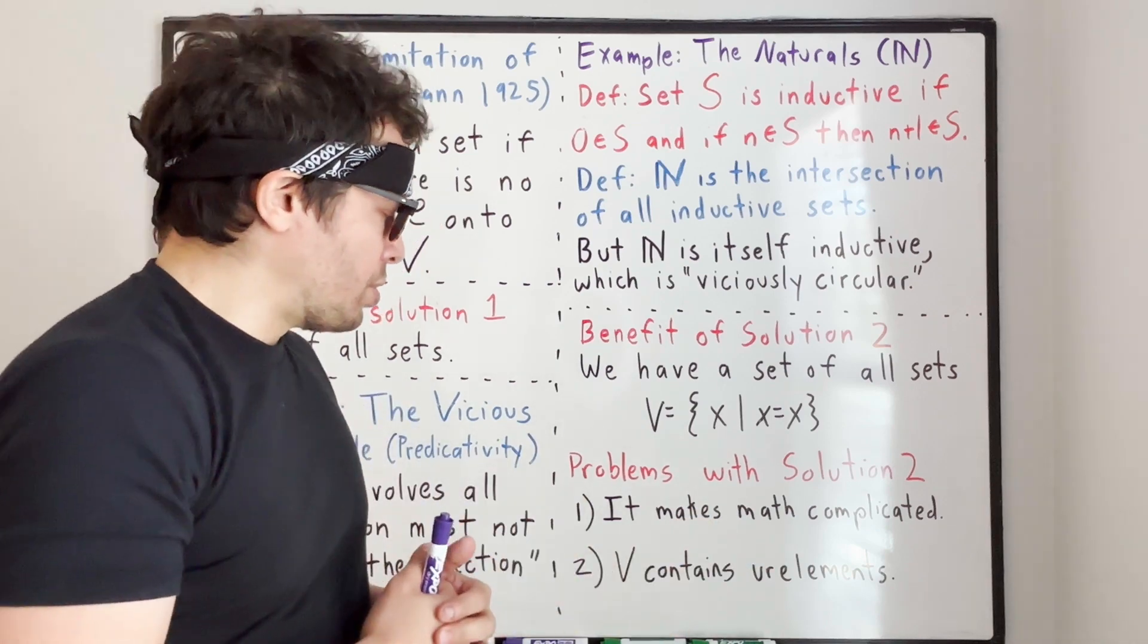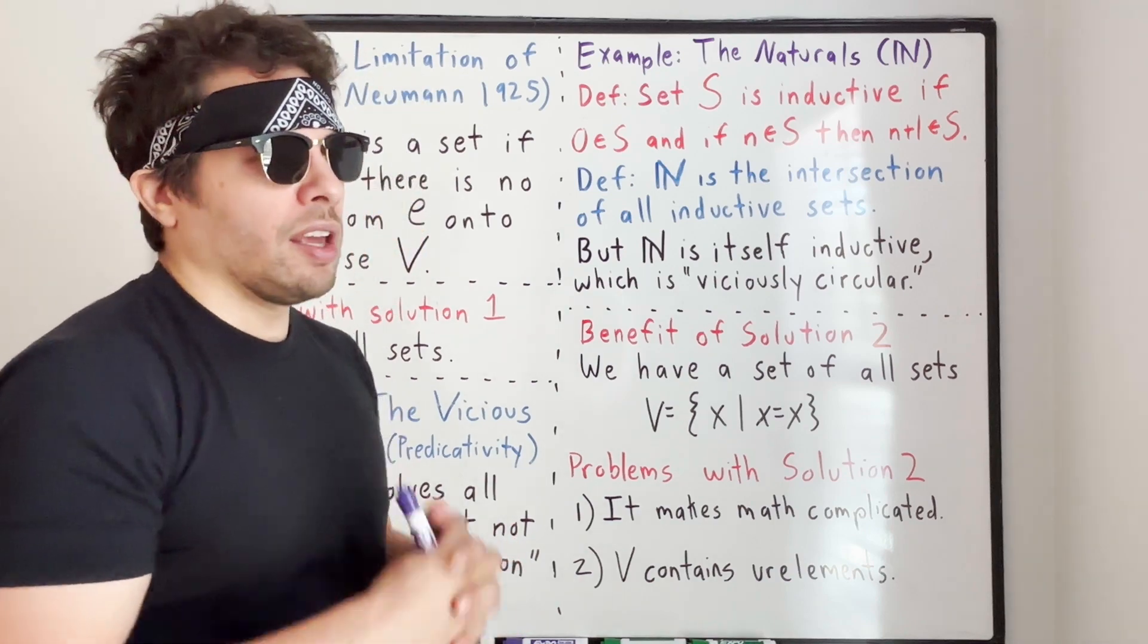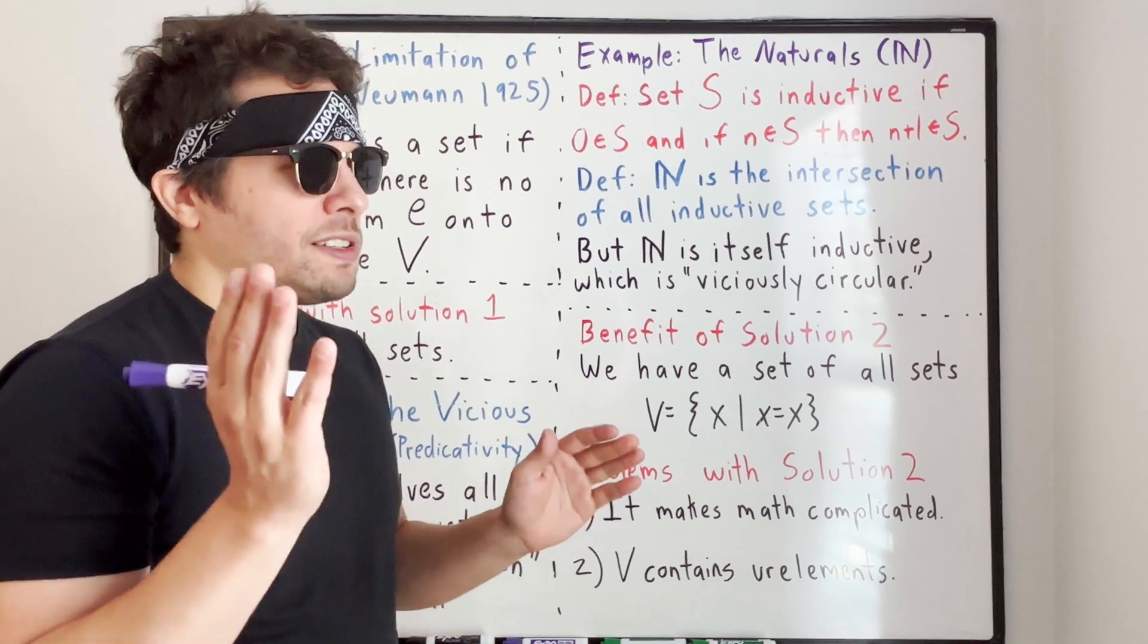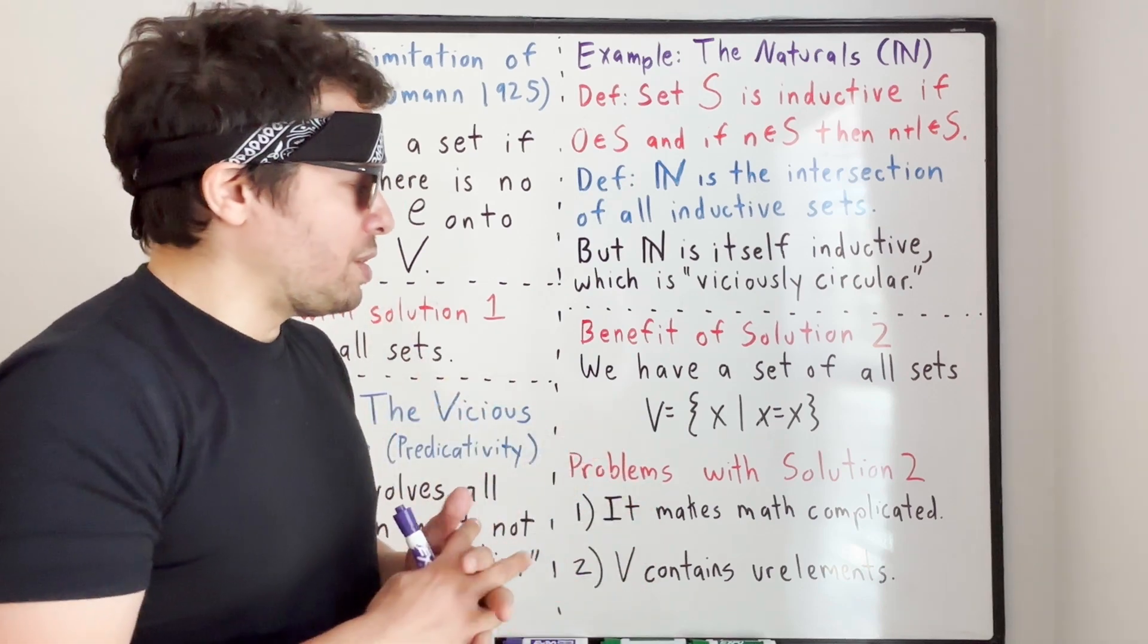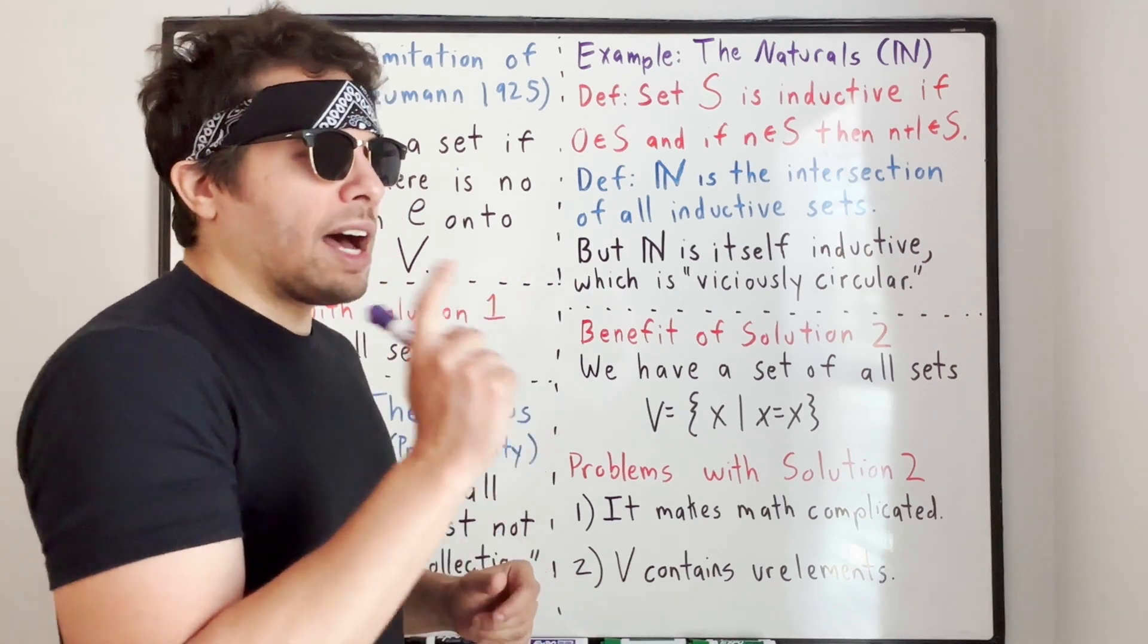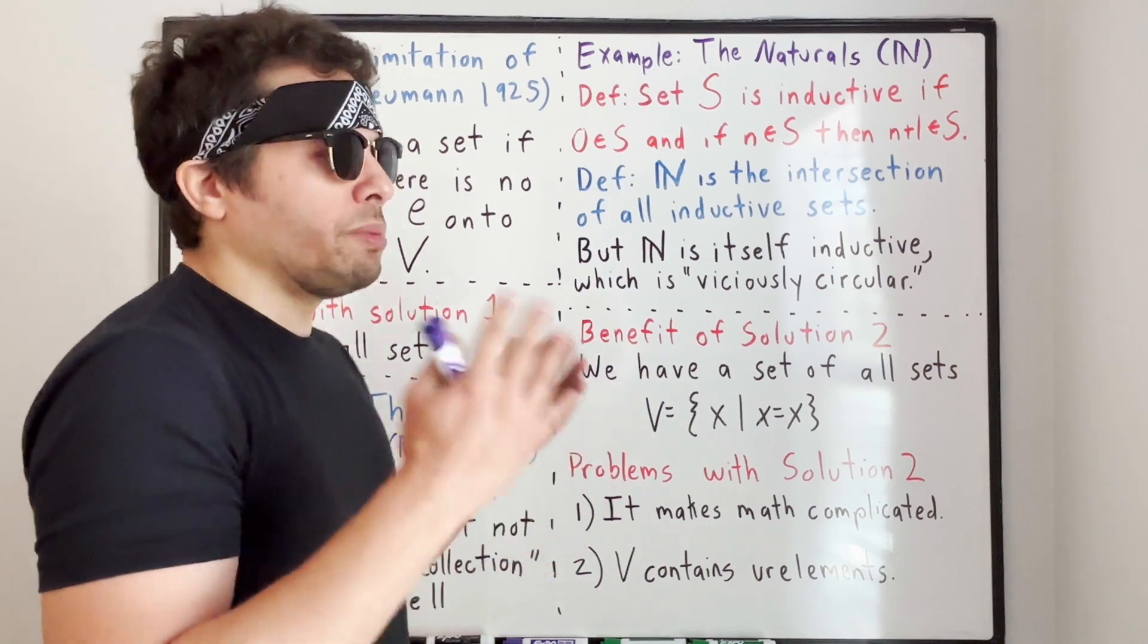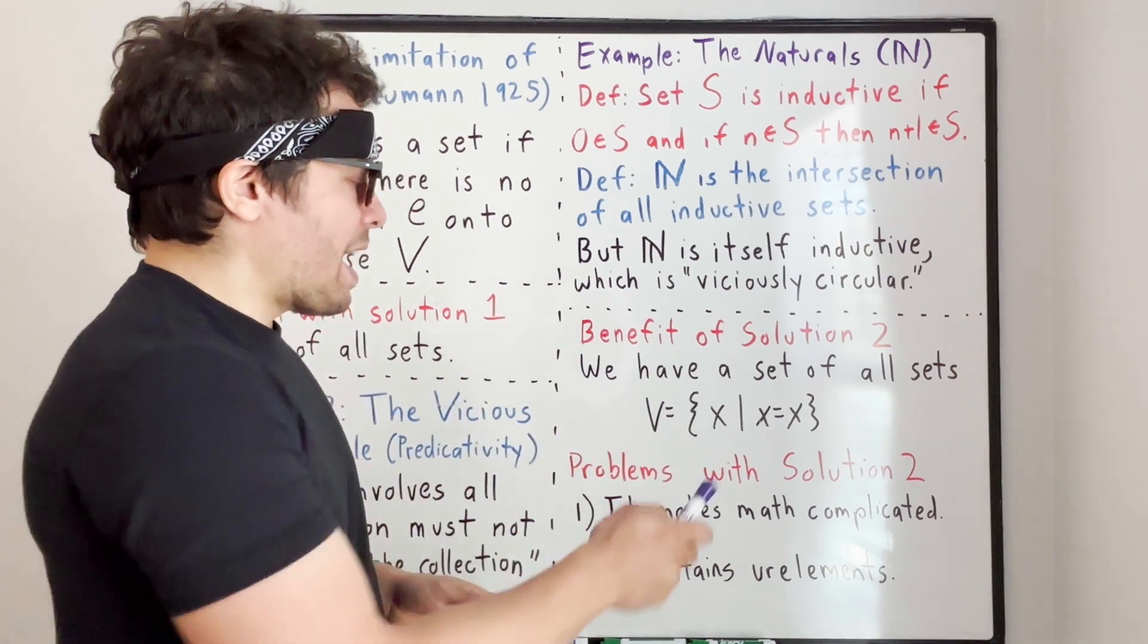Another problem with Solution 2 is that the universe of all sets ends up containing urelements. In Zermelo-Fraenkel set theory, one of the benefits, it's very sleek, it's very concise, it's very easy to use. There's only one object that doesn't contain any elements, and that is going to be the empty set.